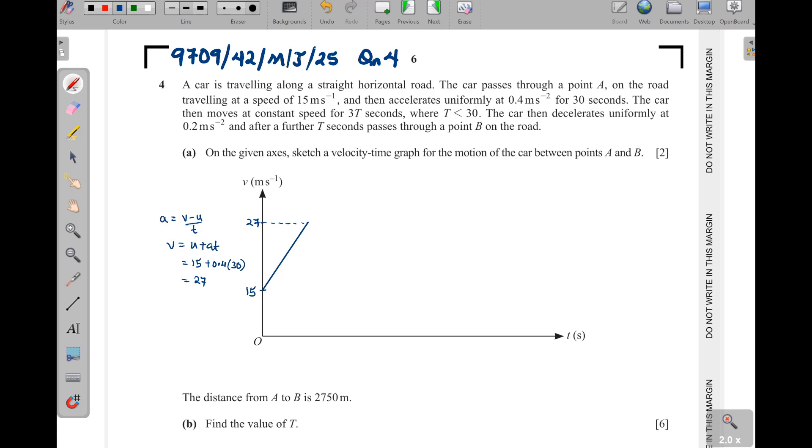So that final velocity is going to be 15 plus the acceleration 0.4 times the time taken 30 seconds. Now this is 12 plus 15, you'll get 27. So meaning we shall draw this one here to 27. From there, the car then moves at this constant speed for 3T. So first of all, this one here took 30 seconds. So that is 30. If it is 30, we shall add it on the 30. We shall have 30 plus 3T.